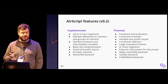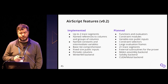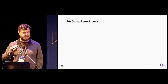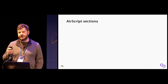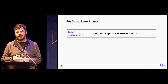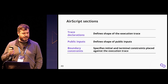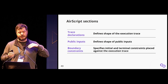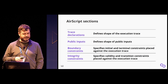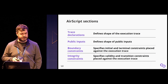With V0.2 we'll have about 95% of what we need for MidenVM—one or two things still missing will follow shortly after. AirScript consists of four sections: trace declaration, where you specify the shape of the trace; public inputs; boundary constraints—both initial and terminal, asserted against the first and last row of the execution trace; and finally integrity constraints, a general term covering both validity and transition constraints.